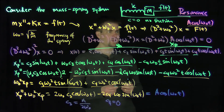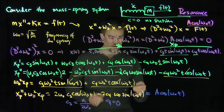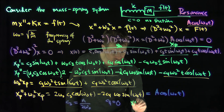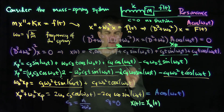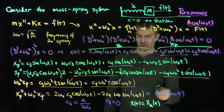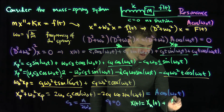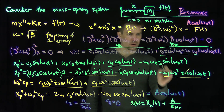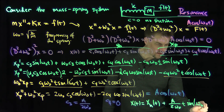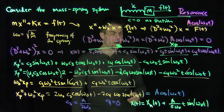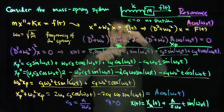We've found the general solution. x of t equals x_h of t plus the particular solution, which is (a over two ω₀) times t sine ω₀t. Why do we say the system exhibits resonance? The homogeneous solution just oscillates up to an amplitude of the square root of c₁² plus c₂².